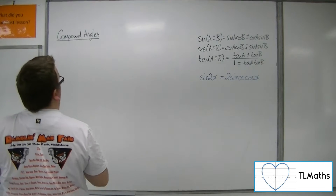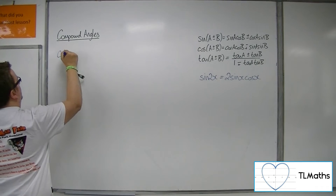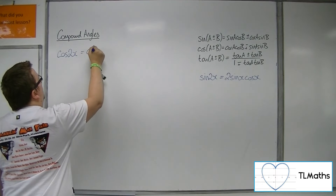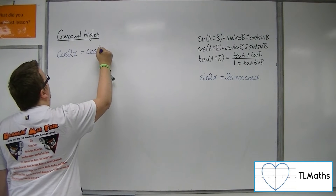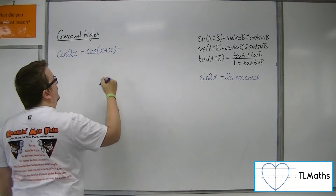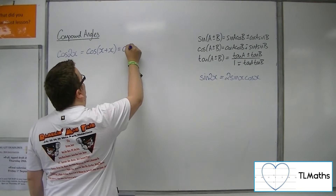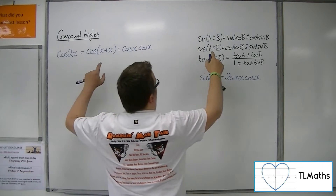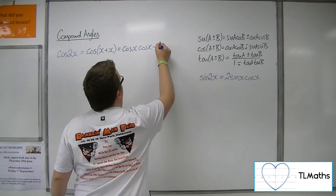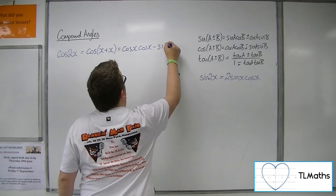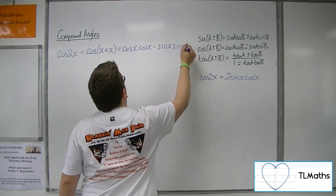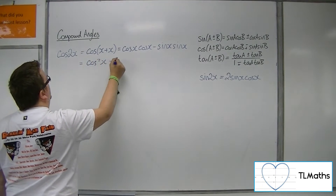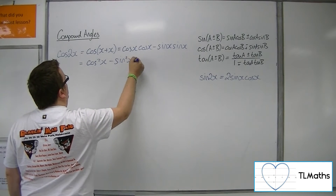What about cos of 2x? Using the same method, that's cos of x plus x. So we get cos x times cos x, and because the compound angle formula has a minus sign for cosine, we subtract sine x times sine x. So cos 2x equals cos squared x minus sine squared x.